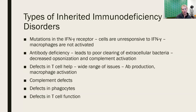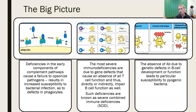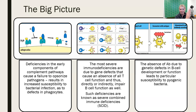Looking at the big picture of immunodeficiencies: if there is a deficiency in the complement cascade, notably on the early end like at the C3 level — where maybe C3 isn't cleaved for some reason — that will lead to an issue for bacteria that are removed by phagocytosis. Bacterial infections tend to be the major issue we see with people who have complement defects.